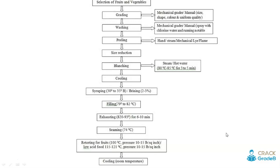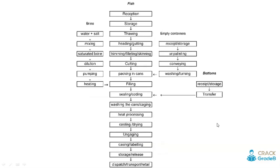This is a flow diagram for the canning of fruits and vegetables — after cooling there are processes like labeling and storage. This is a flow diagram showing the canning of a fish.